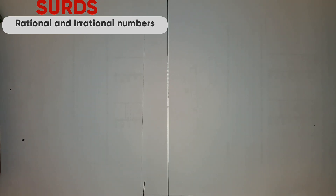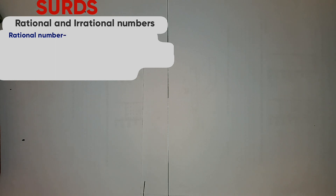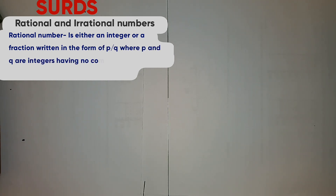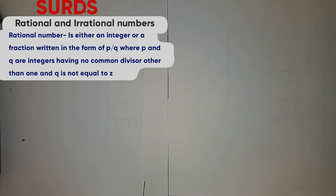So what is a rational number? A rational number is either an integer, or a fraction written in the form P over Q, where P and Q are integers having no common divisor other than 1, and Q should not be equal to 0.